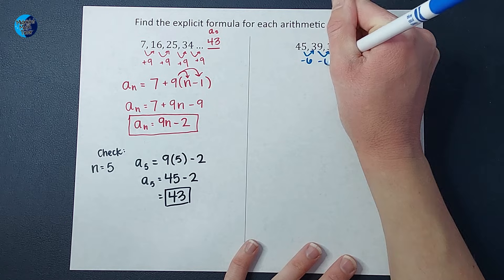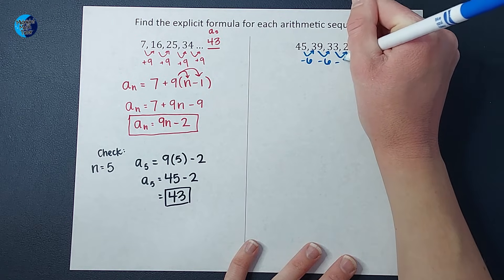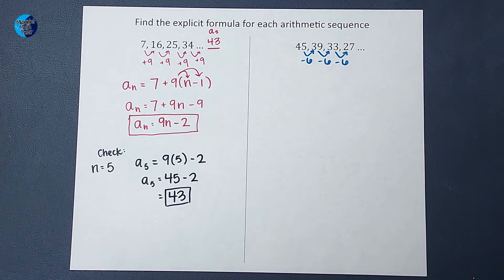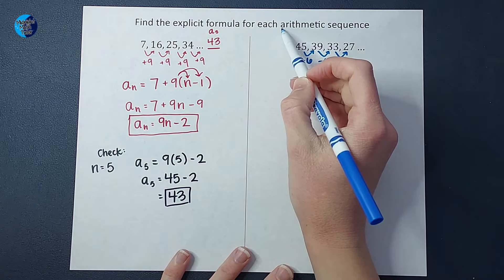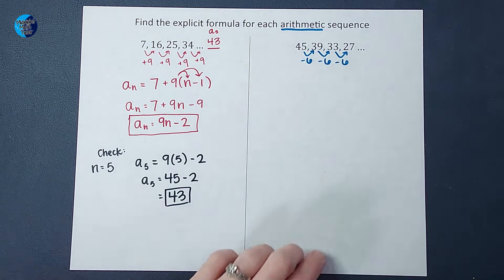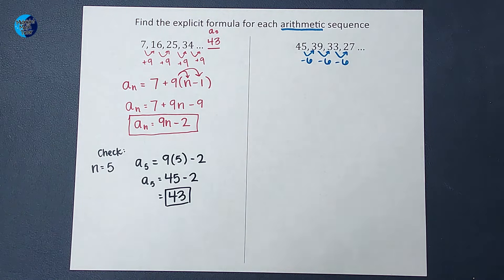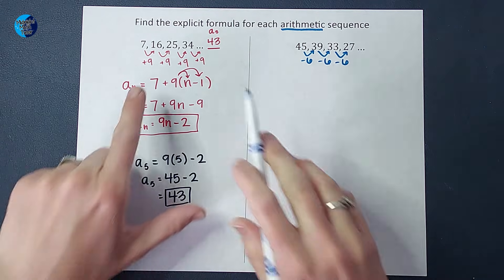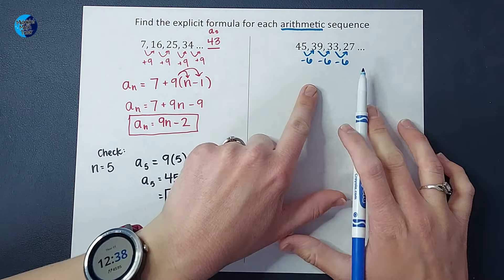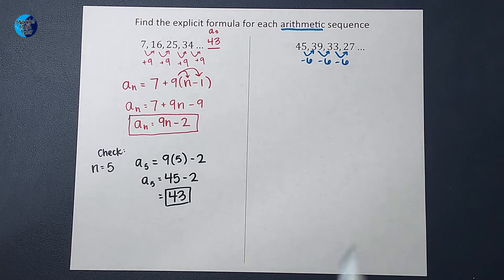You always want to make sure that the pattern continues. And I should also point out, this told us just straight up that these were arithmetic sequences. But if we weren't told that, I could figure that out because we were adding and subtracting. That makes it arithmetic. If you're multiplying or dividing, that's what makes it geometric. I have a whole video on that if you need a refresher.